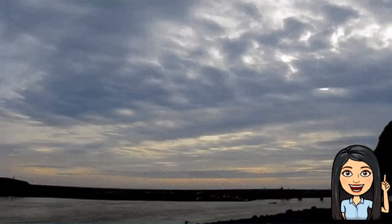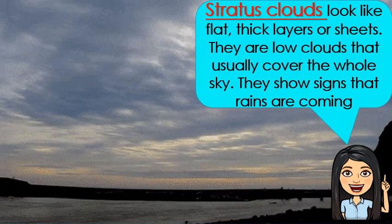The third one is the stratus clouds. They look like flat thick layers or sheets. They are low clouds that usually cover the whole sky. They show signs that rains are coming.